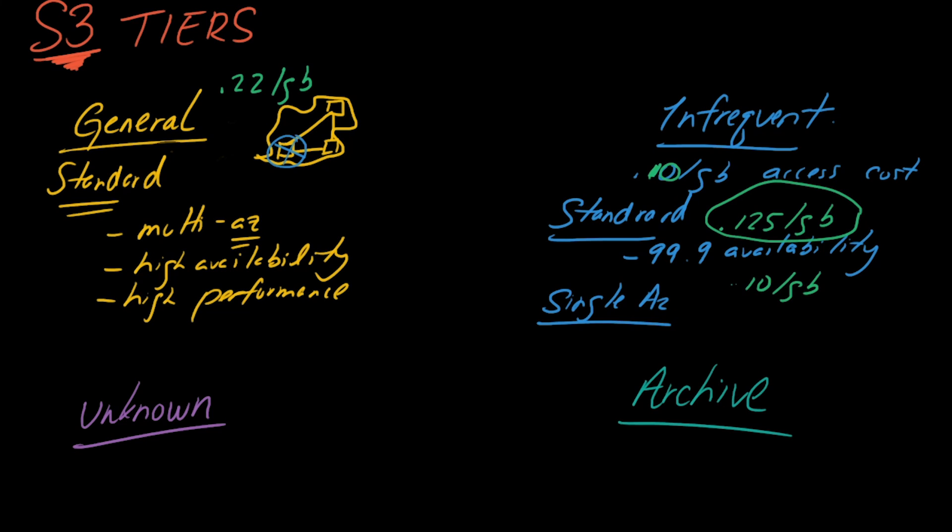So that's it for general and infrequent. So just to recap those two we have a standard variant which is multi AZ high availability high performance. Infrequent has two sub tiers. There's the standard which has high availability and then the single AZ which is lower cost but more risk essentially.